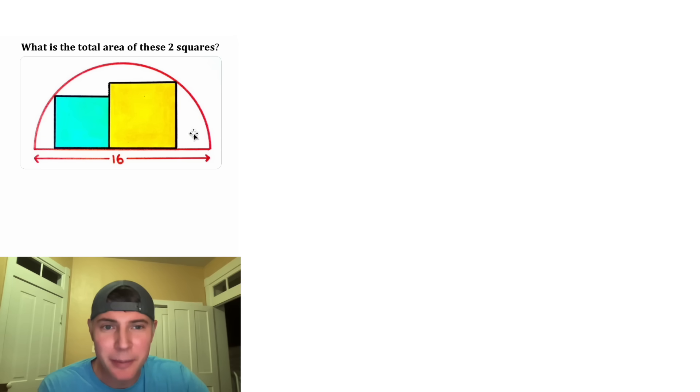what is the total area of these two squares? And they're contained in this semicircle with a diameter of 16 units. If you want to try it on your own, pause it right now, because I'm going to solve it in three, two, one.